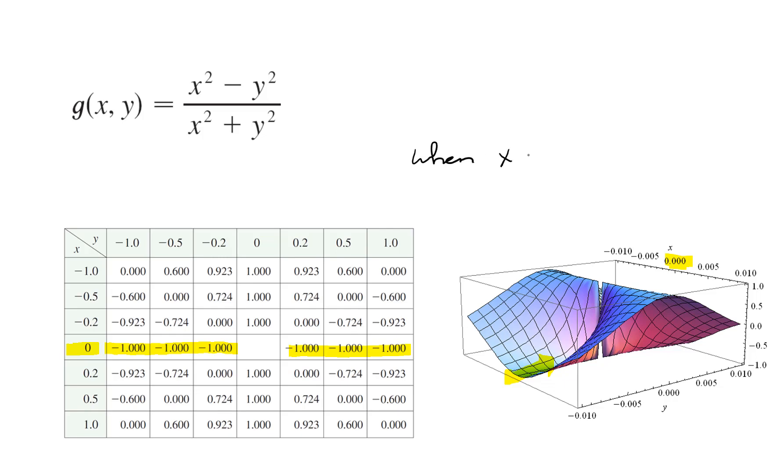When x equals 0, and then y travels, y trends towards 0, we travel along a valley. And you can see that valley right there. And the z coordinate looks like it's about negative 1.